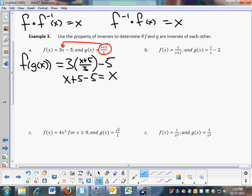That is not enough. I must also check the other way. So now I'm going to do g composed of f of x, and I should get x as well. So I take 3x minus 5, and I plug it in for x. If I do that, I get 3x minus 5 plus 5 divided by 3. The 5's cancel.